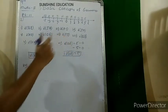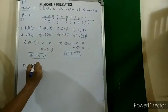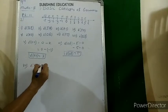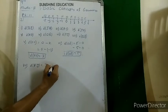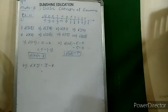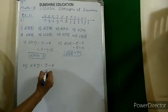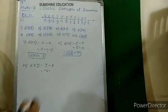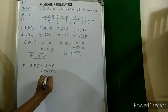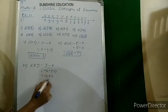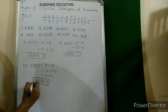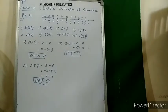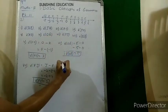Seventh: distance PJ. J is greater than P, so J minus P. Coordinate of J is minus 2, coordinate of P is minus 4. So minus 2 minus (minus 4) = minus 2 plus 4 = 2. Distance PJ is 2 units.